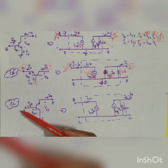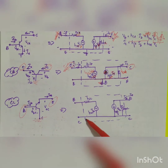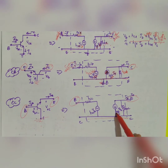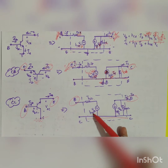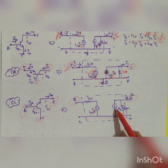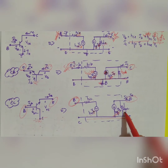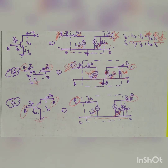For the CC (common collector) configuration, the collector is grounded, input is the base, and output is the emitter. The parameters become hic, hrc, hfc, and hoc. The voltage source is hrc·Vce, the current source is hfc·Ib, and output admittance is hoc. These are the three configurations of hybrid parameters asked for 10 marks.